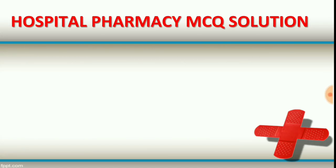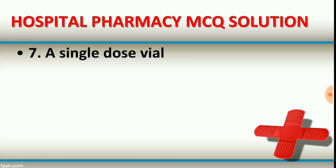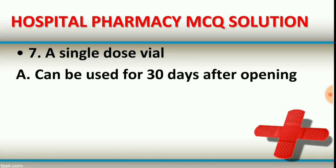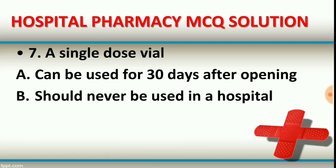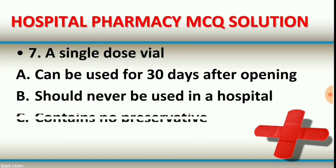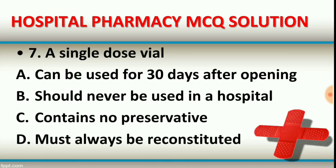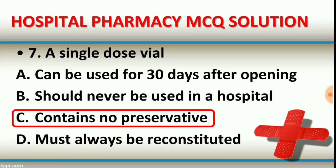Question number seven: a single dose vial. Option A: can be used for 30 days after opening. Option B: should never be used in a hospital. Option C: contains no preservative. Option D: must always be reconstituted. The right answer is option C — a single dose vial contains no preservative in its formulation.